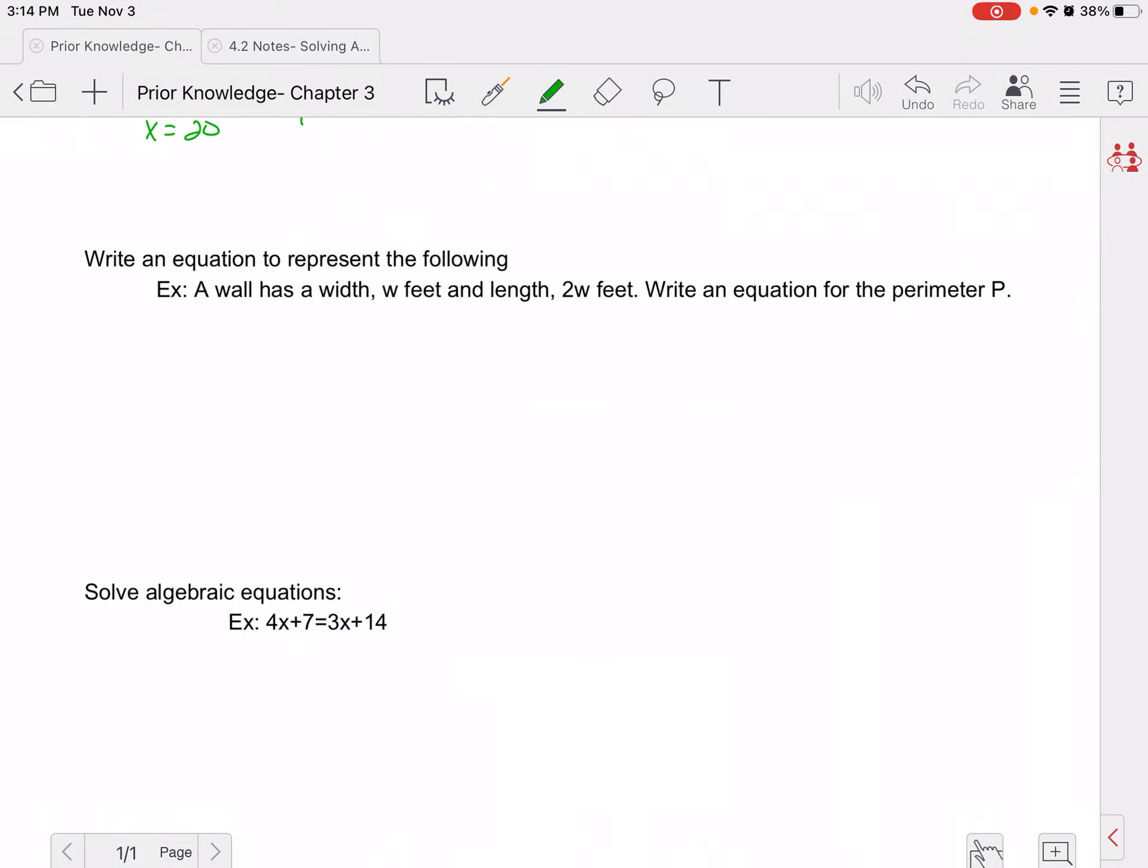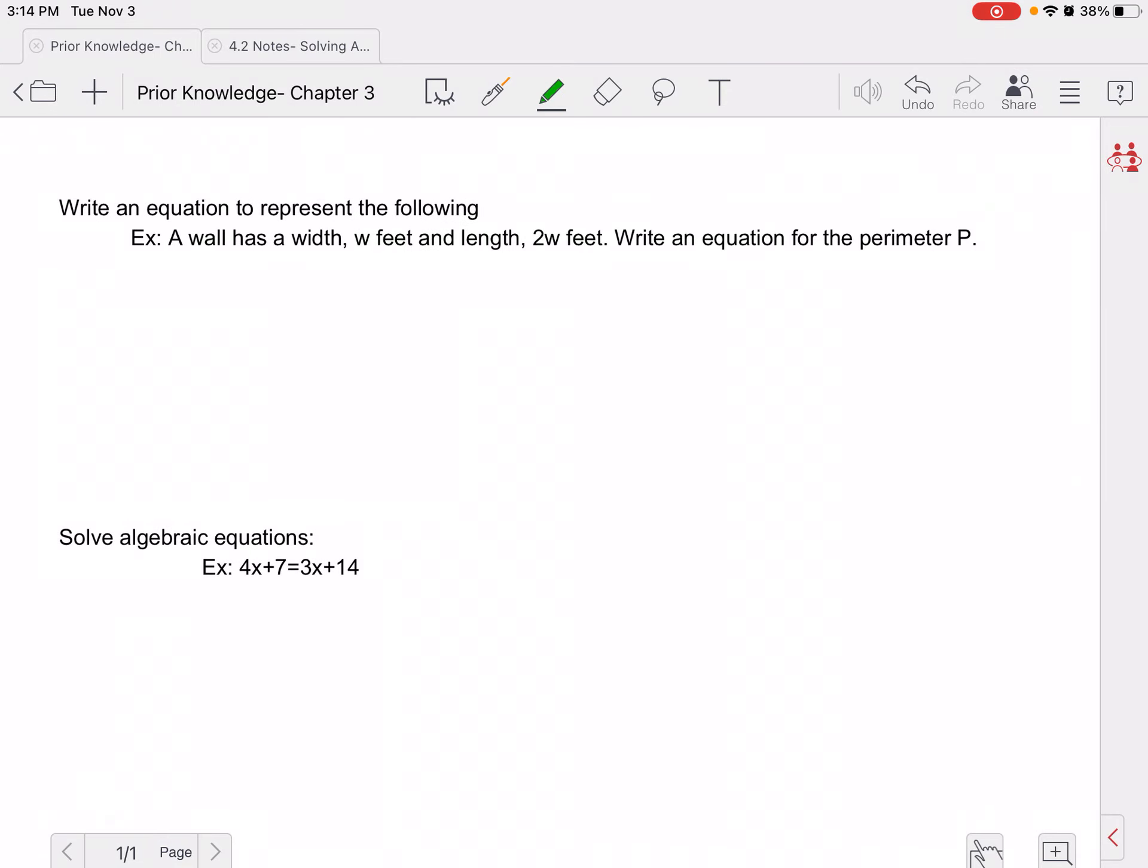Write an equation representing the following. A wall has a width w and a length 2w. Write an equation for the perimeter p.